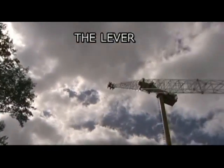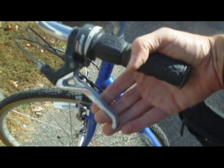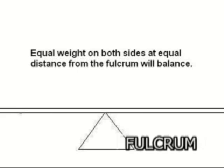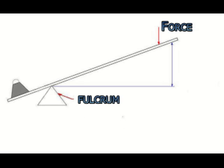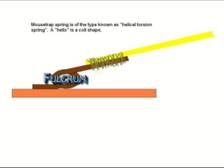The lever is seen in applications large and small. The lever is a rigid object with a pivot point, or fulcrum. By moving the fulcrum away from the center point of the lever, mechanical advantage can be realized by trading distance moved for the amount of force. In the Mousetrap car, the fulcrum is at the spring.